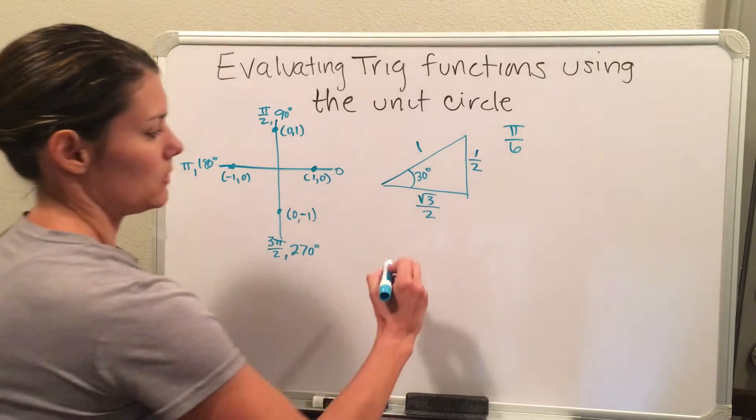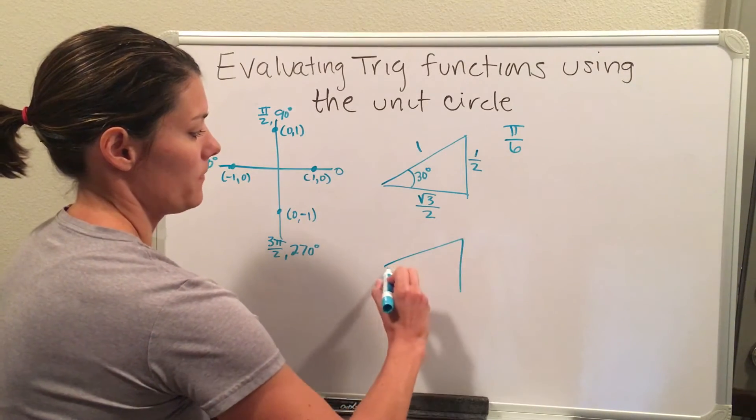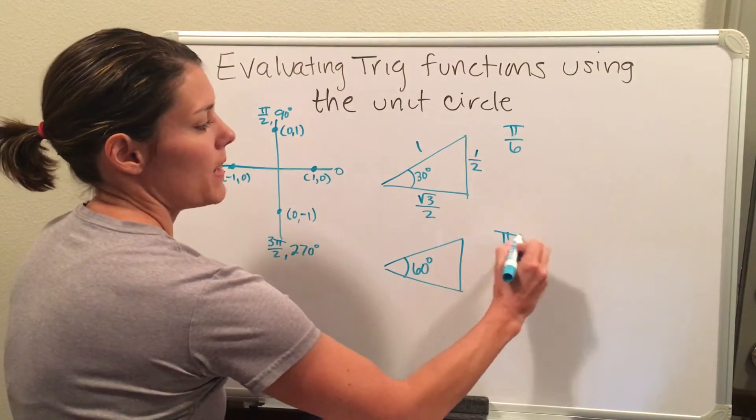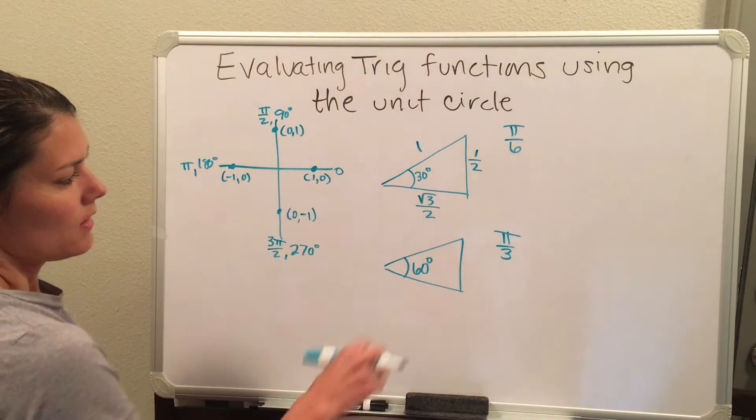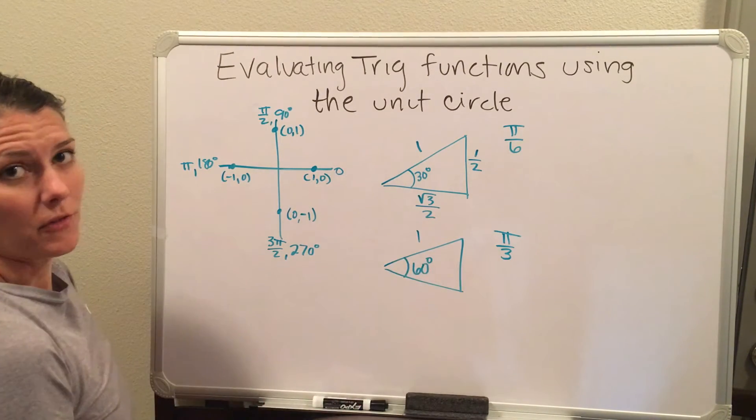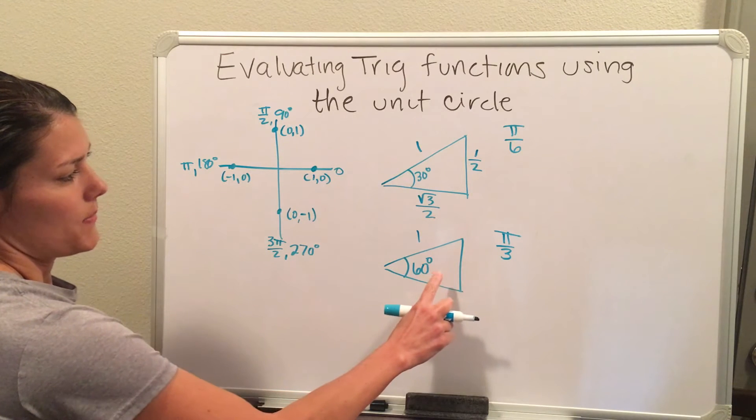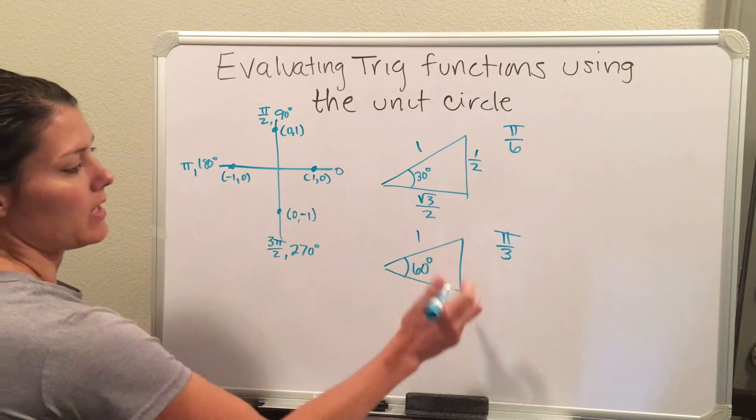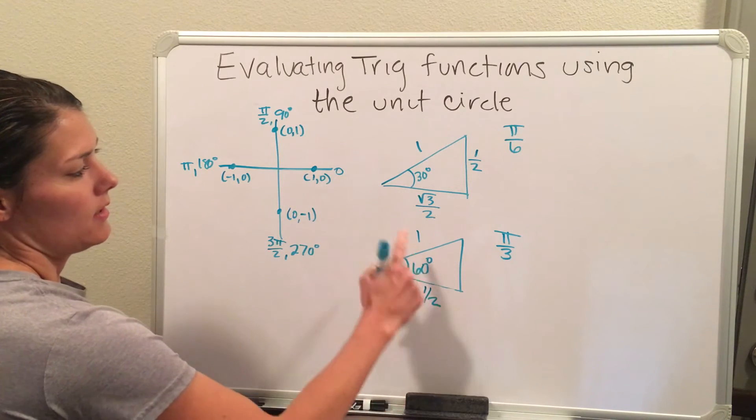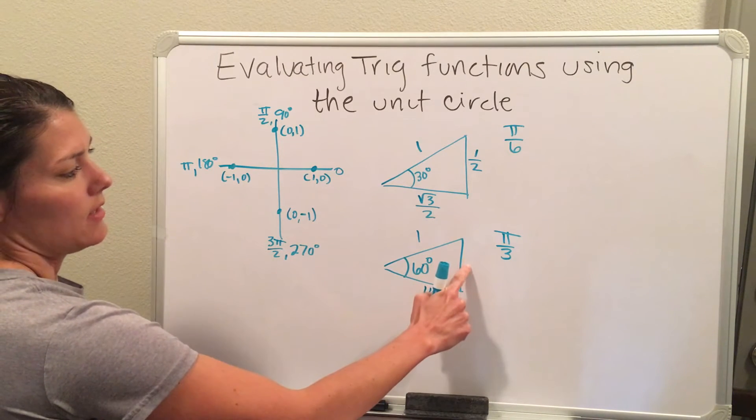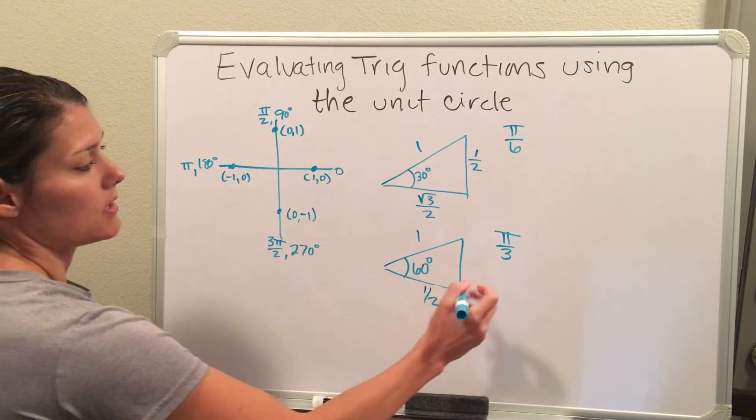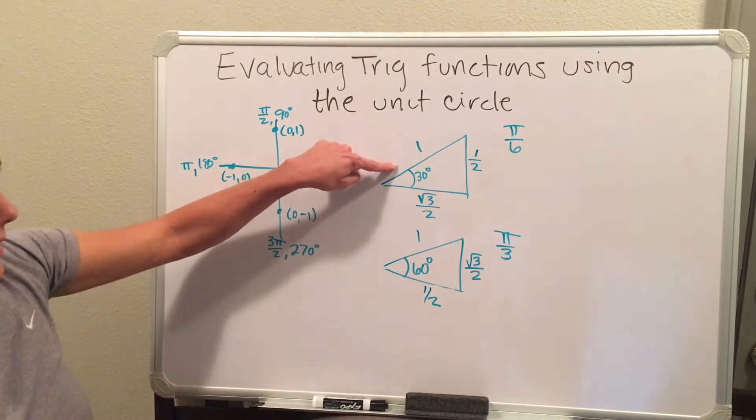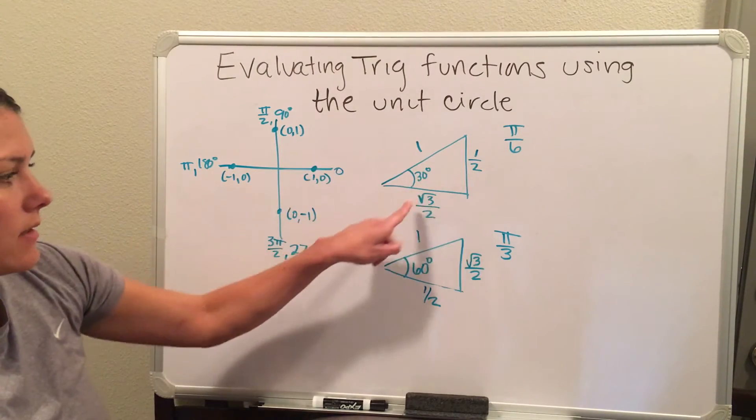Another triangle in the unit circle is a 60-30-90. So here we have a reference angle of 60 degrees. These are your π over 3s. My unit is still 1 for the hypotenuse. Again, my short leg, which is now down here because my short leg is across from the 30, is half of the hypotenuse, and then your long leg, which is across from the 60, is your short leg times square root of 3. You can see it's just like the 30-degree triangle, but your x and your y are flipped.